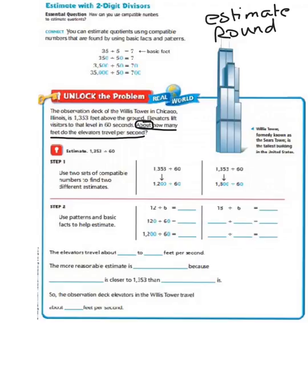The other way that we can go is to round up. So another basic fact would be 1,800, because 18 divides by 6 evenly.